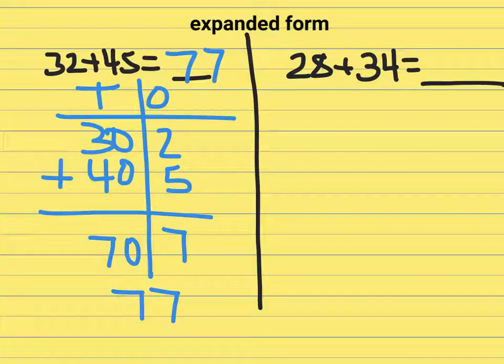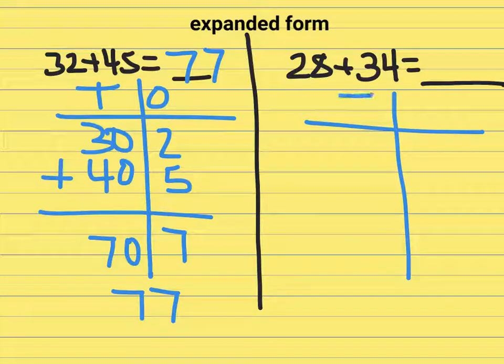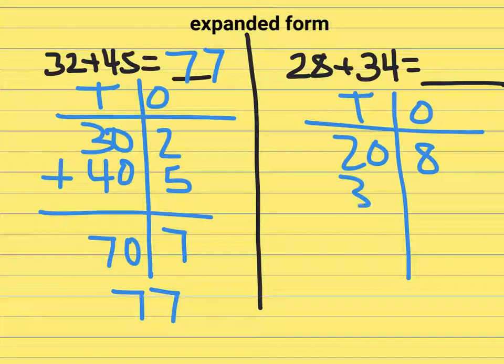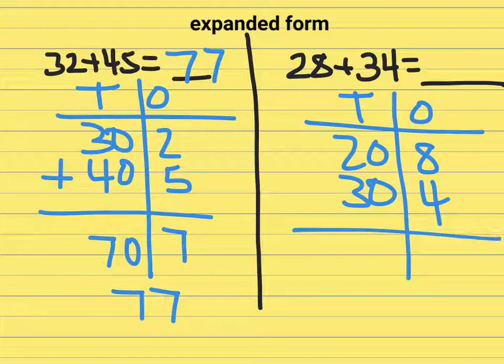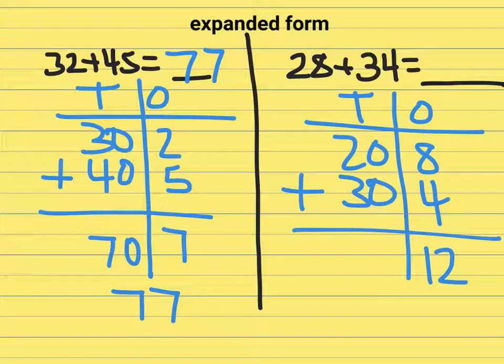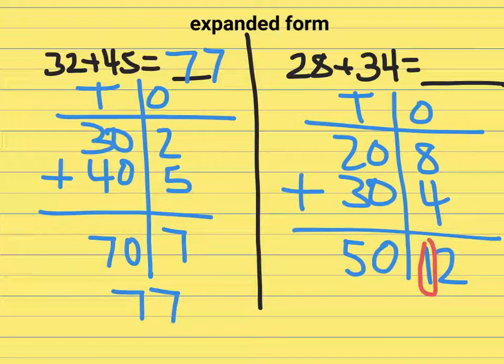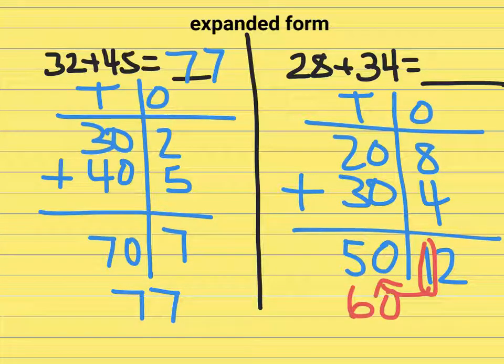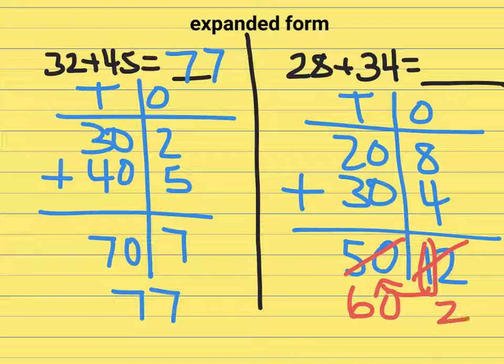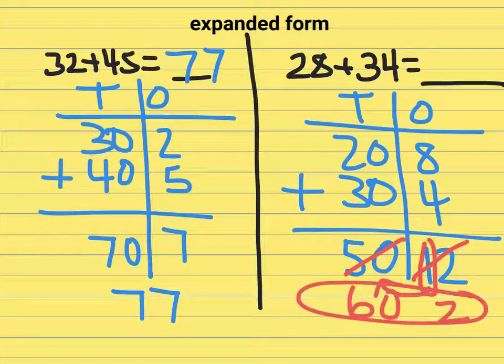I'll take a look now at one that has regrouping. Again I'll do my T-chart with tens and ones: 20 and 8, 30 and 4. I'm going to add these so 8 and 4 is 12, 20 and 30 is 50. When I get to this point I need to realize that we have a ten here. This ten needs to be pushed over so now the 50 is 60 and the 12 is 2. So now I have my final answer, 62.